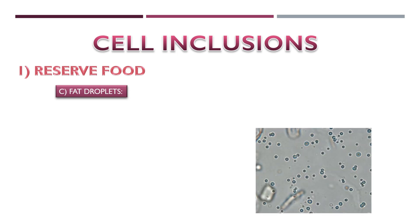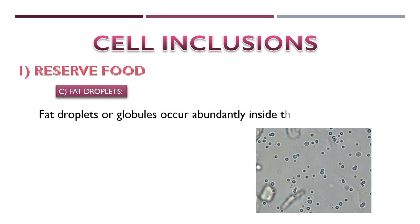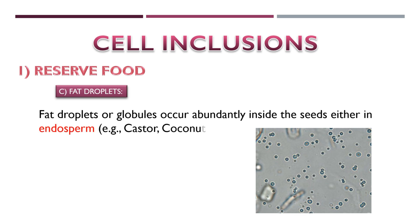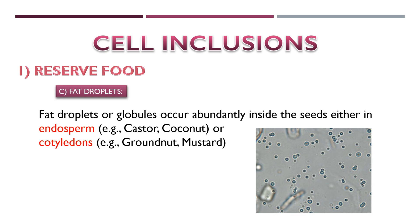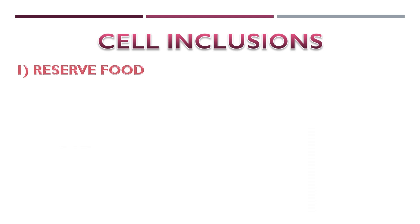Thirdly, fat droplets. We can see these stored as globules in seeds such as castor, coconut, and wheat endosperms, and in cotyledons of groundnut and mustard.